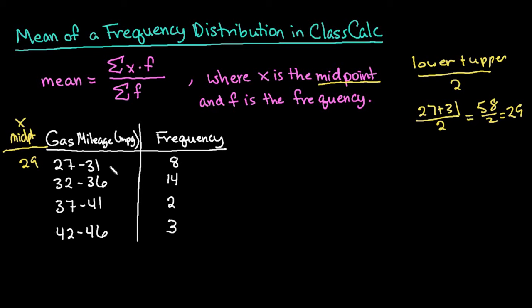Or what is easier, if you notice, to go from one class to the next, I'm adding 5. So 31 plus 5 would give me 36, plus 5 would be 41, plus 5 would be 46. So that same concept applies to the midpoint. So instead of having to use the formula four times, I can just add the class width to it to get to the next one. So since this one is 29, my next one would go to 34 and then 39 and 44.